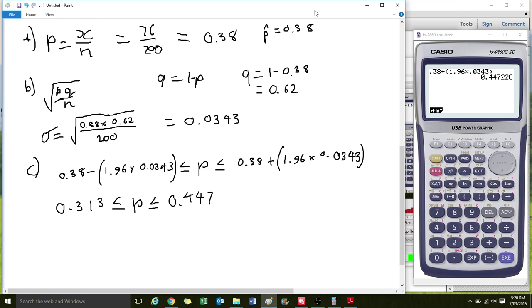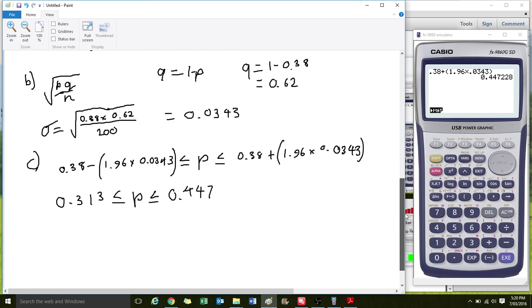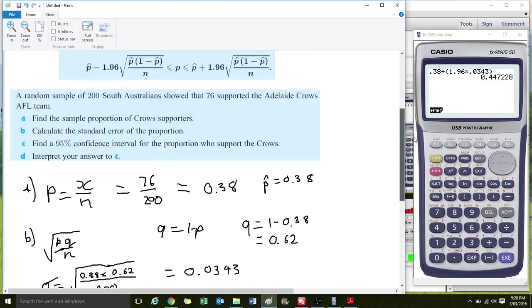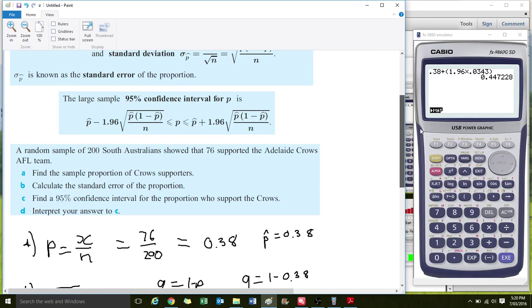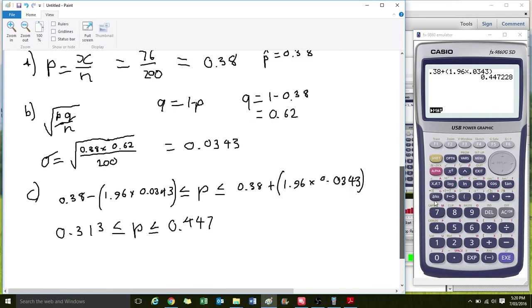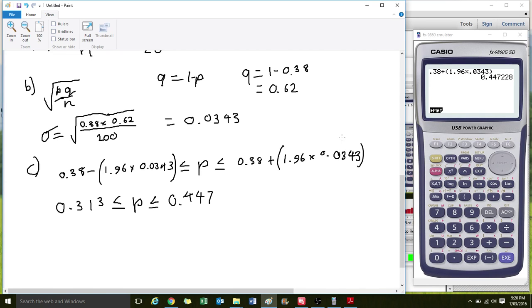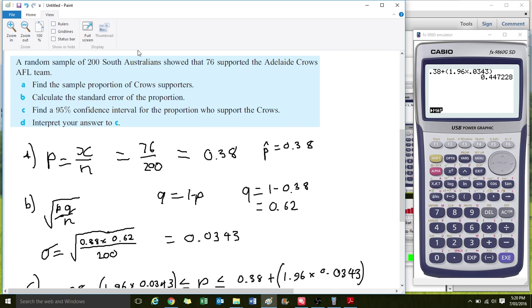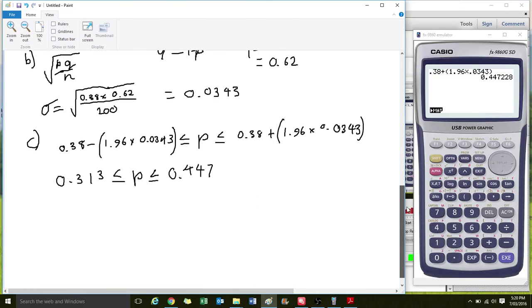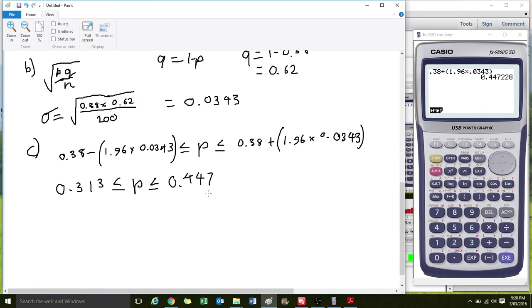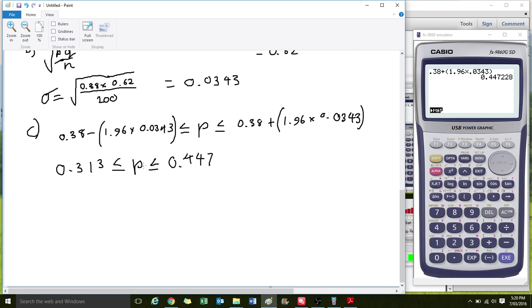So what this means then is that we are 95% confident... this part D says interpret your answer. We are 95% confident that the population proportion, which means if you sample every single person in South Australia, the population we're talking about, every single person in South Australia, you would find that between 0.313 and 0.447 of the population follows the Crows. So we're 95% confident that out of every single person in South Australia, either 31.3% of people or between 31.3% and 44.7% of people follow the Crows.